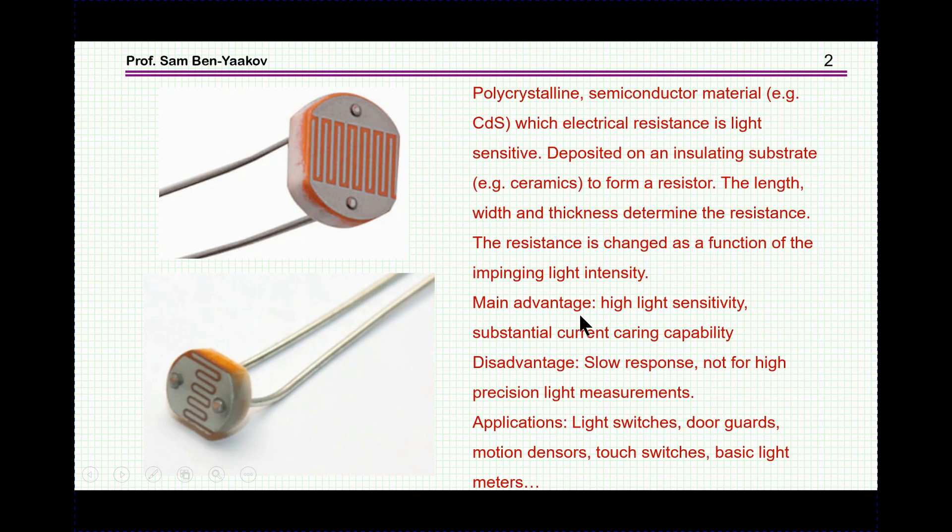What are Photocells? Photocells are basically composed of some material, usually a polycrystalline semiconductor, for example cadmium sulfide, which is deposited on a substrate. This material is sensitive to light, so the resistance is changing with light.